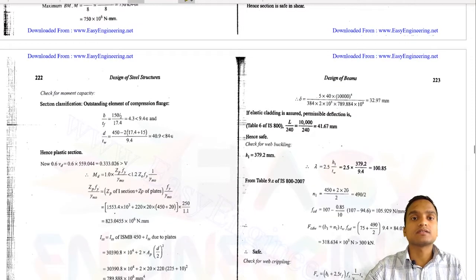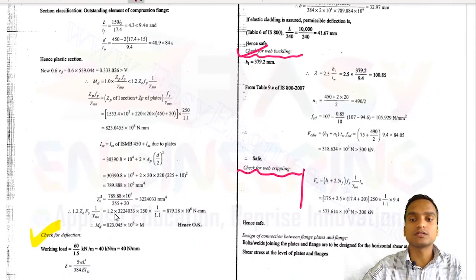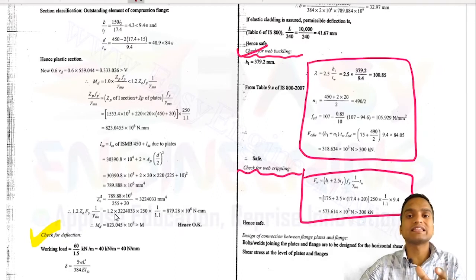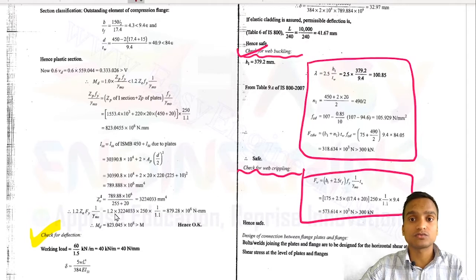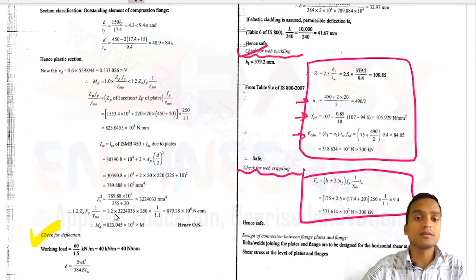The section comes safe in almost everything. We also check for web buckling and web crippling. For web buckling, we calculate the slenderness ratio of the web portion as 2.5 × h₁/t_w, then calculate n₁ and f_cd values involving interpolation. Finally we check that the capacity should be greater than the applied load of 300 kN. Web crippling is checked similarly.